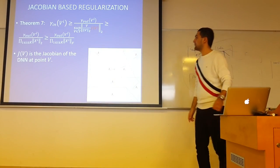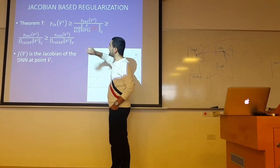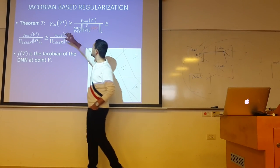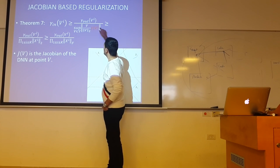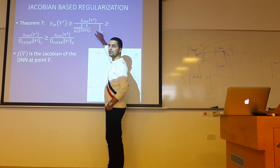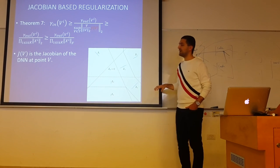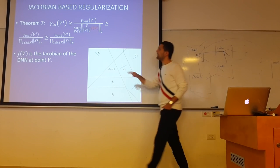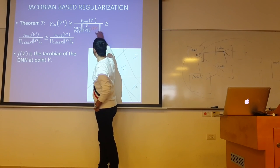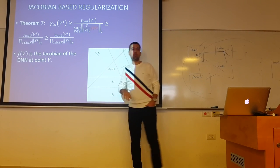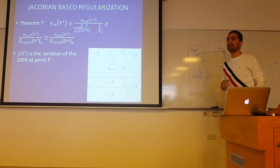Looking at the first inequality, it relates the input margin to the output margin divided by something related to the Jacobian of the network evaluated at the data points. If we use the ReLU non-linearity, the mapping becomes piecewise linear, and because of that the Jacobian is also piecewise constant and easy to calculate.